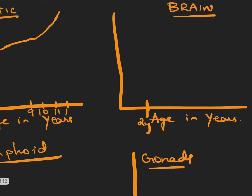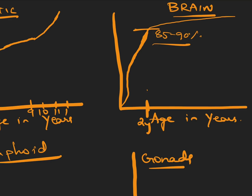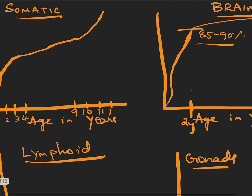Brain growth is very unique. By around two years of age, approximately 85 to 90 percent of brain growth has already occurred. It is therefore very important to protect the child from infections until two years of age. After two years, only marginal brain growth occurs and it plateaus.